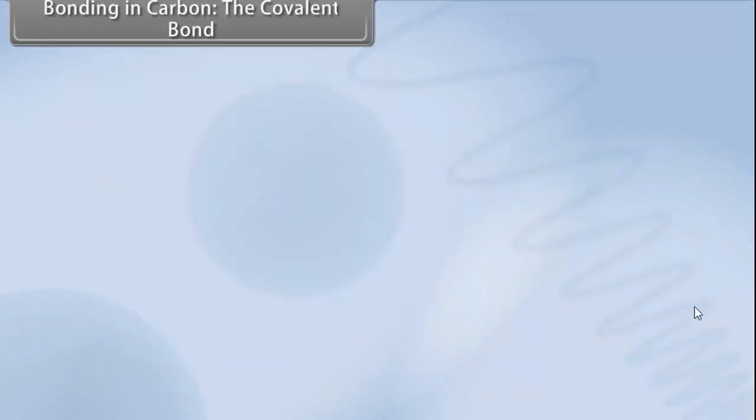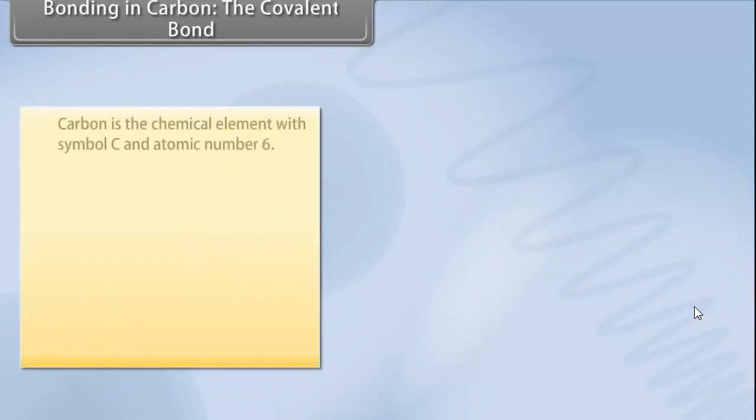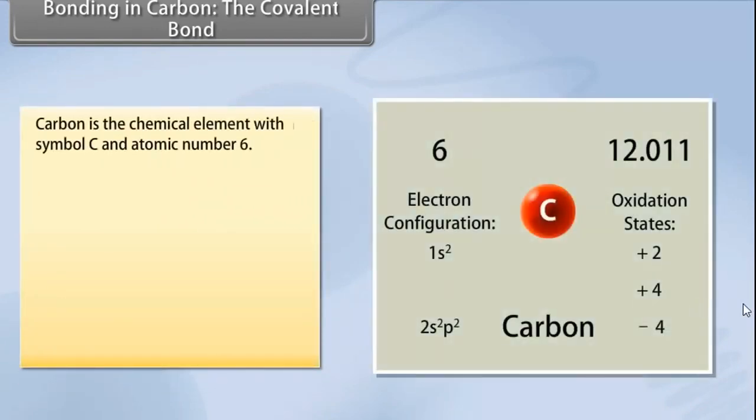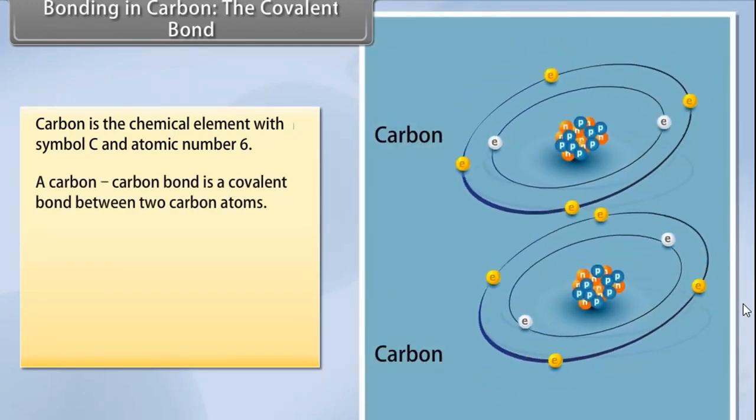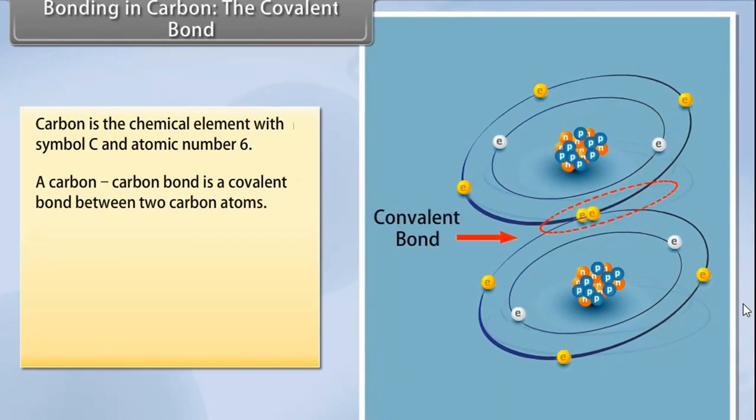Bonding in carbon: the covalent bond. Carbon is the chemical element with symbol C and atomic number 6. As a member of group 14 on the periodic table, it is non-metallic with 4 electrons available to form covalent chemical bonds. A carbon-carbon bond is a covalent bond between 2 carbon atoms. The most common form is the single bond, a bond composed of 2 electrons, one from each of the 2 atoms.